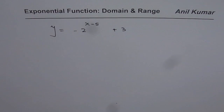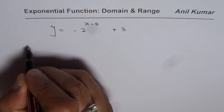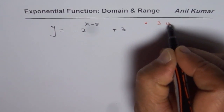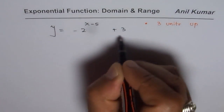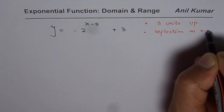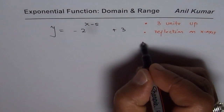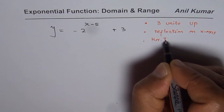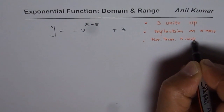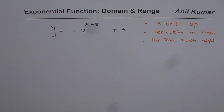In this function, we observe that it has been translated 3 units up, and there is a reflection on the x-axis. There is also a horizontal translation of 5 units. But the horizontal translation does not really affect the domain and range. So we will look into these transformations and then write down the domain and range for such functions.